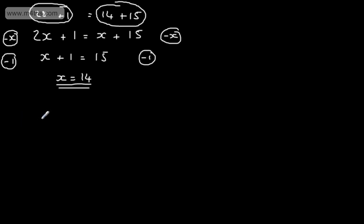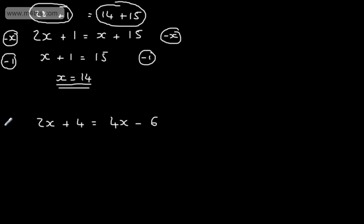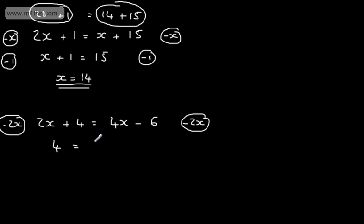Let's look at another one: 2x plus 4 is equal to 4x minus 6. This time I've got 2x on this side and 4x on this side. So I'm going to take 2x from both sides — I only want x's on one side of the equation. Taking 2x off both sides, on the left-hand side I'm just going to have 4, and on the right-hand side I'm going to have 2x minus 6.